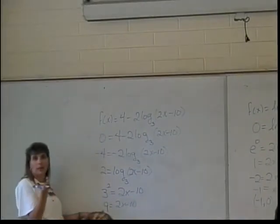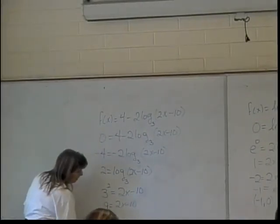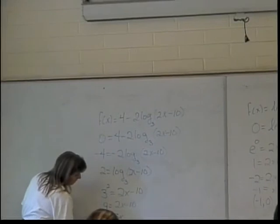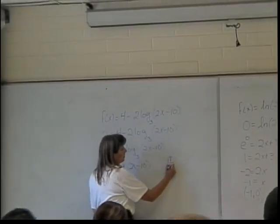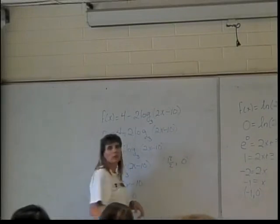And then what do I do? Add 10. 19 equals 2x. So 19 halves equals x, which gives me the x-intercept at (19/2, 0).